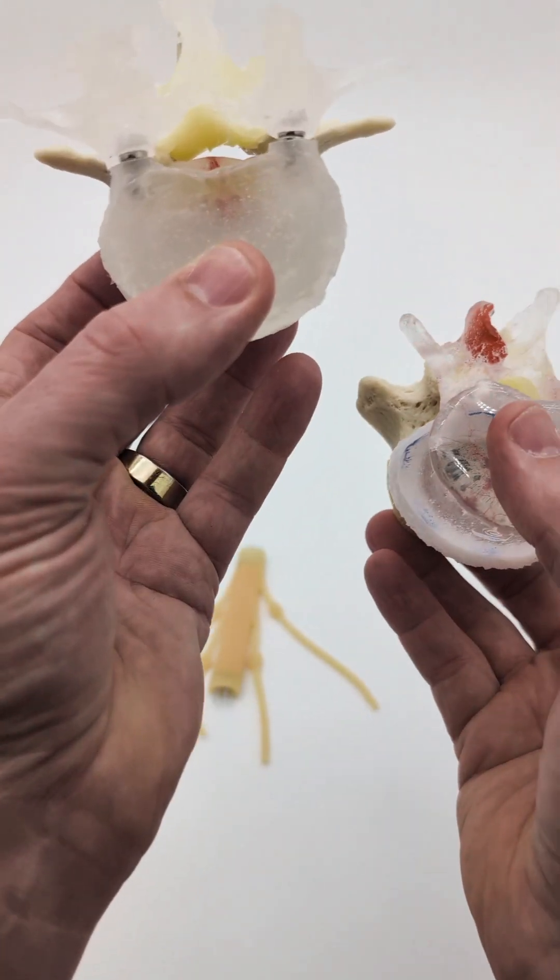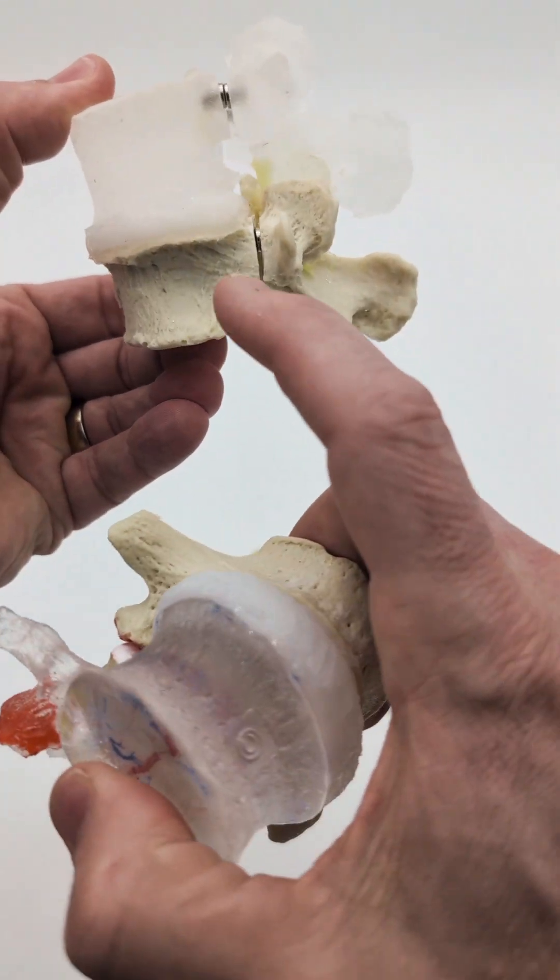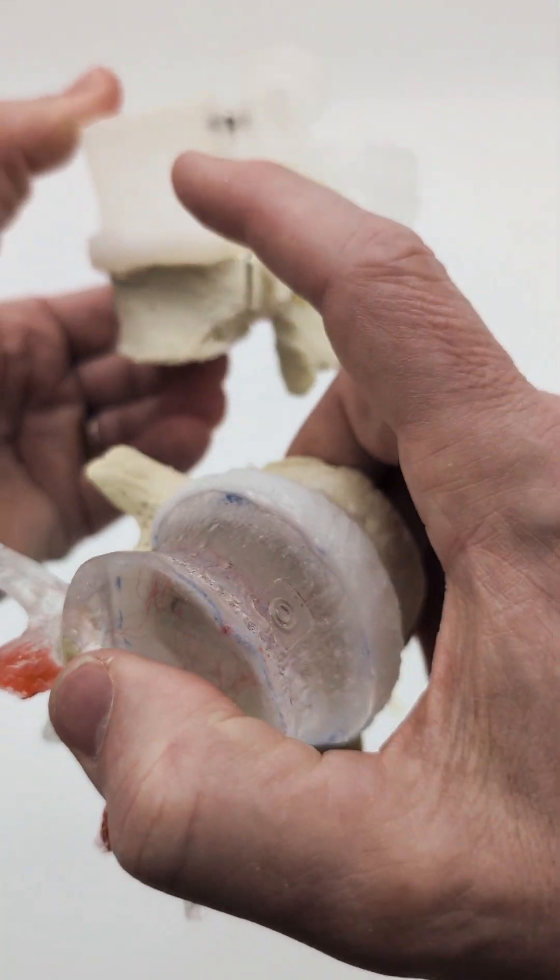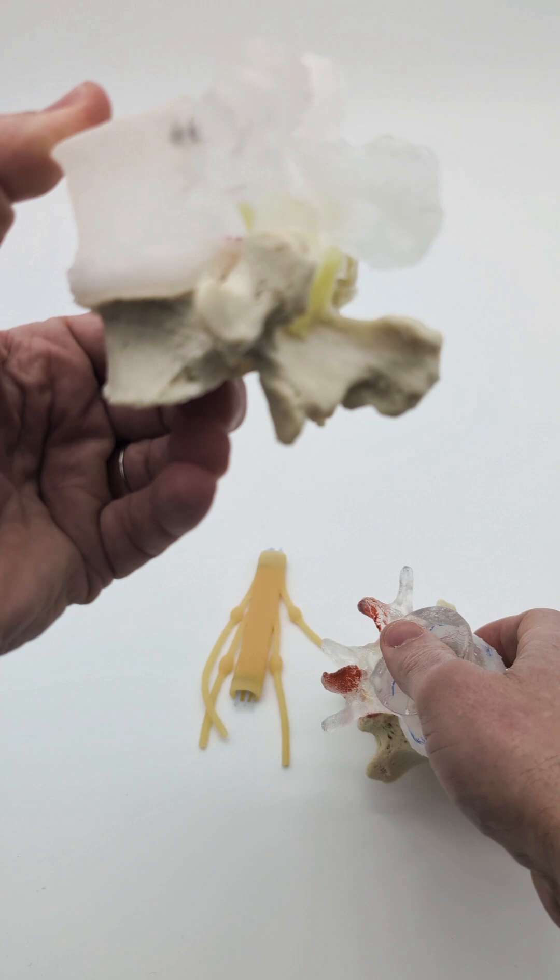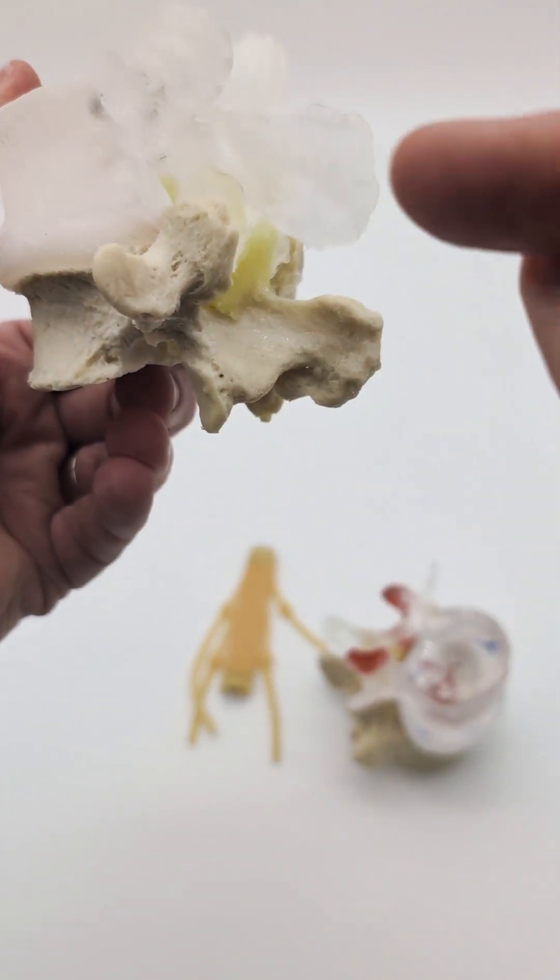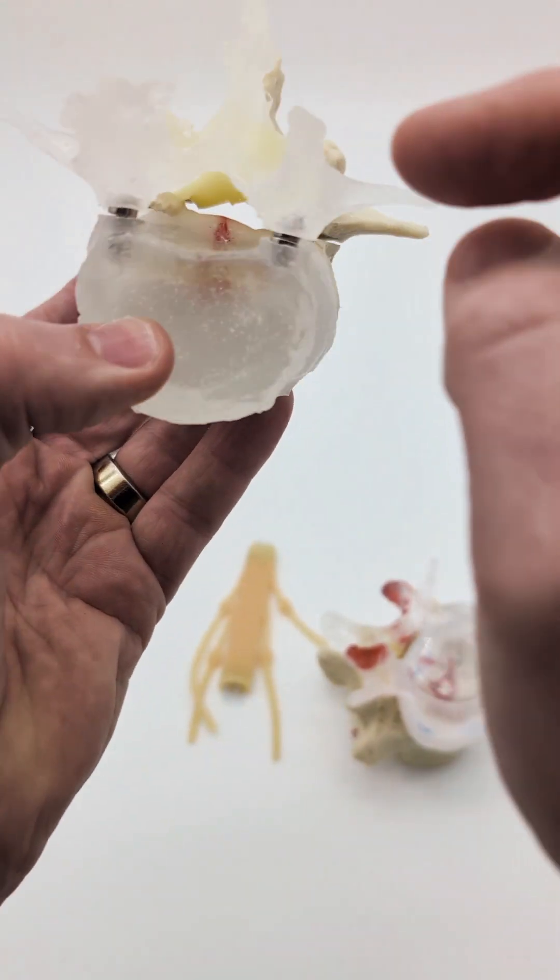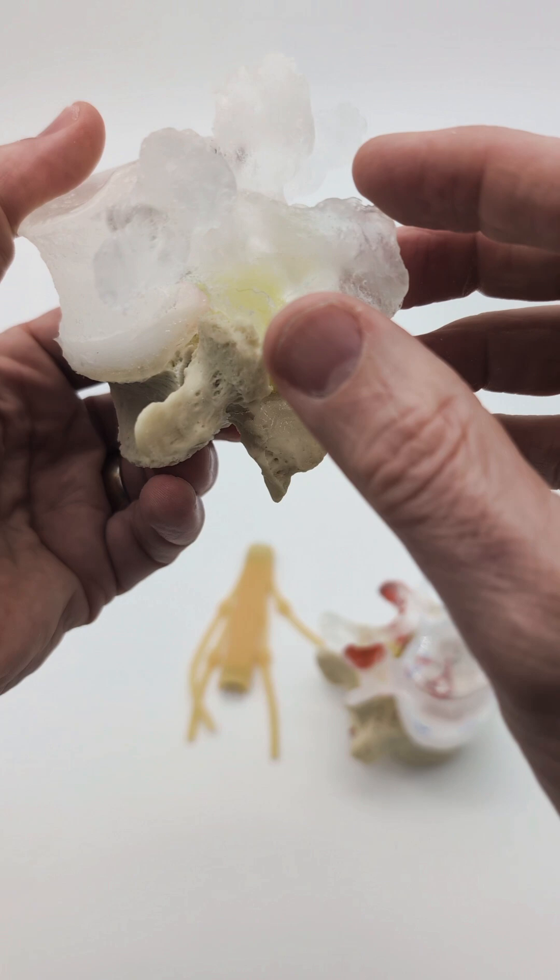You can see how when the disc height comes down, the ligamentum flavum will also come down, the disc will flatten, but you'll also get a flattening and then the ligamentum flavum will thicken into the spinal canal.